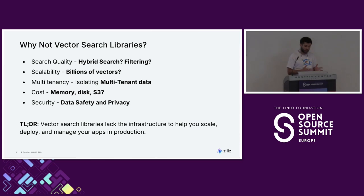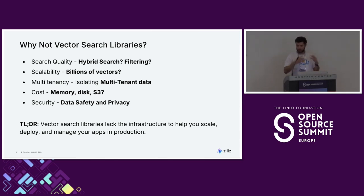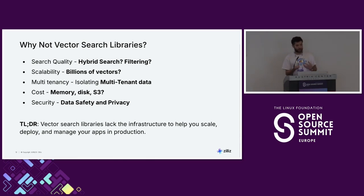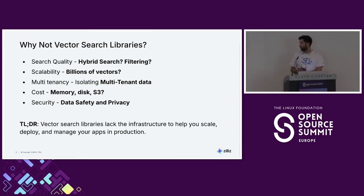You also have search libraries, which are useful in some cases, but they may lack features like search quality. What about hybrid search? What about filtering? What about scalability — if you want a billion vectors, it might be a struggle. What about cost — are you storing everything in memory or putting some on disk or S3? And what about security and privacy — you might not be able to filter out different vectors.